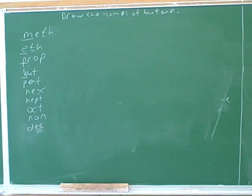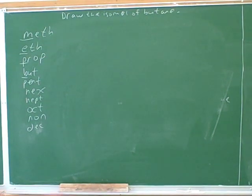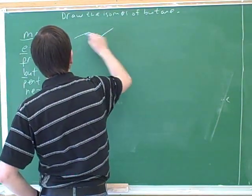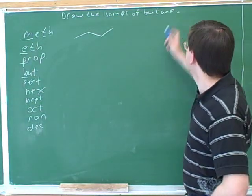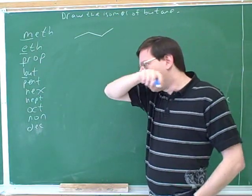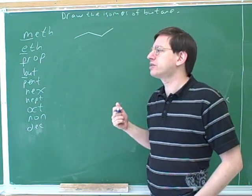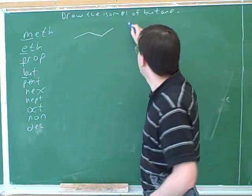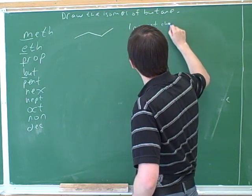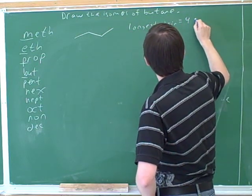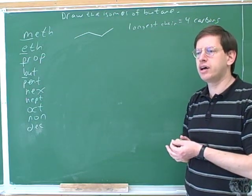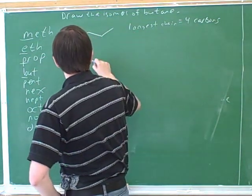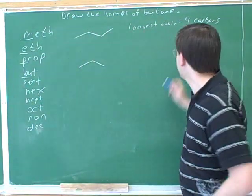First, draw butane. Notice that this has four carbons. The next thing we want to do is draw the longest chain. Here the longest chain is four carbons. Now I'm going to draw a longest chain that has only three carbons. Here's the longest chain with three carbons.